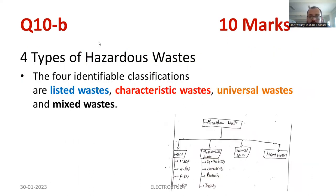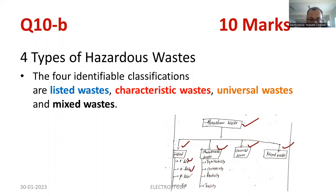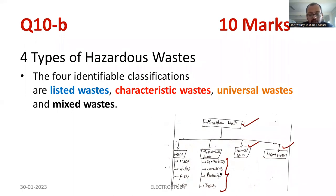It is advisable to draw a flow chart. Hazardous waste is divided into four types: the first one is called listed waste, the second is characteristic waste, the third is universal waste, and ultimately, mixed waste. Prepare a flow chart and write down the sub-classification. In the listed type, F list, K list, P list, and so on are there. Similarly, characteristic waste also has sub-classification. If you mention these, it will be really helpful to evaluate, because I am also one of the evaluators for the university examination. Following everything point by point will really help identify the student's caliber and knowledge level.